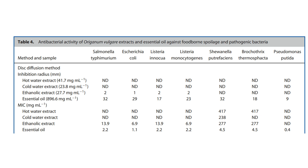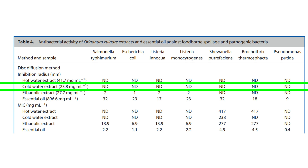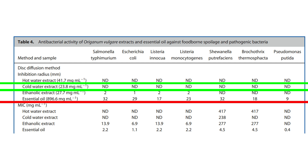In one study, they compared teas made from oregano with its essential oil, using seven different bacteria. They found that the teas had no effect on any of these bacteria, but oregano essential oil had very powerful ability to inhibit all seven tested samples. Therefore, in order to control yeast problems, don't use a tea — use oregano essential oil and hydrosol.